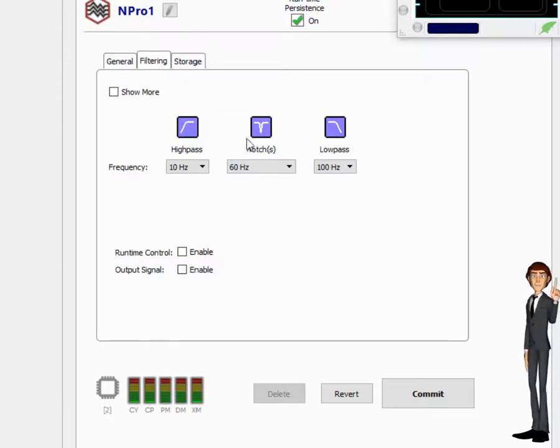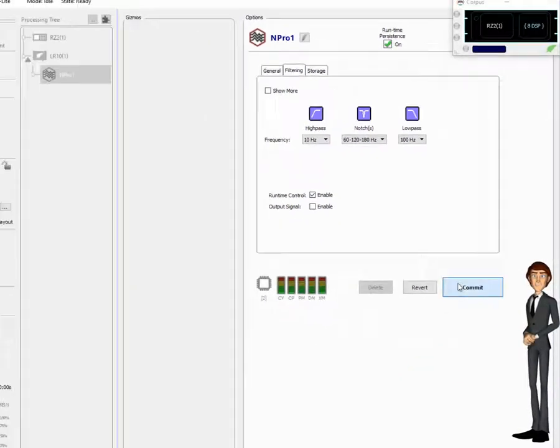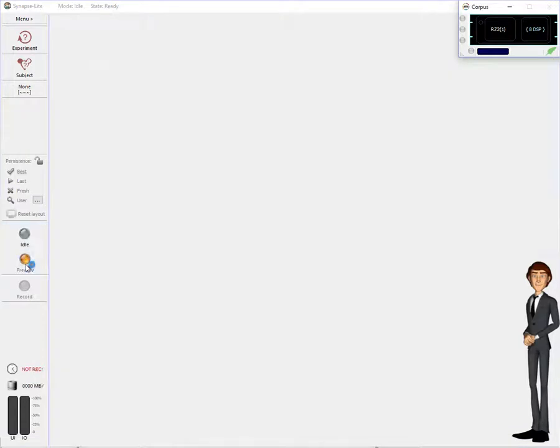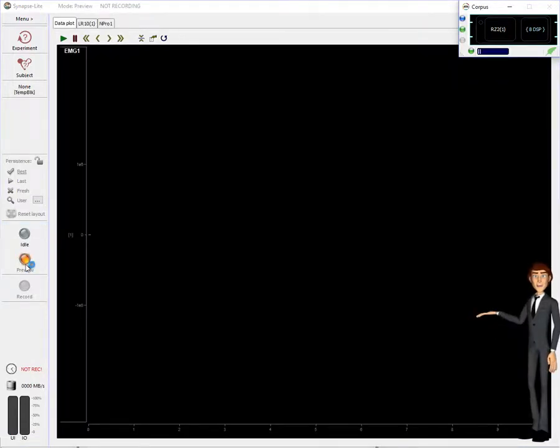Because power mains can corrupt our signal, I like to turn on notch filtering for 60Hz and its harmonics. Also, click the runtime control on, so we can adjust these filter settings while we're collecting data. Click commit to apply these changes and we're ready to record. Click the preview button to switch Synapse into runtime mode.